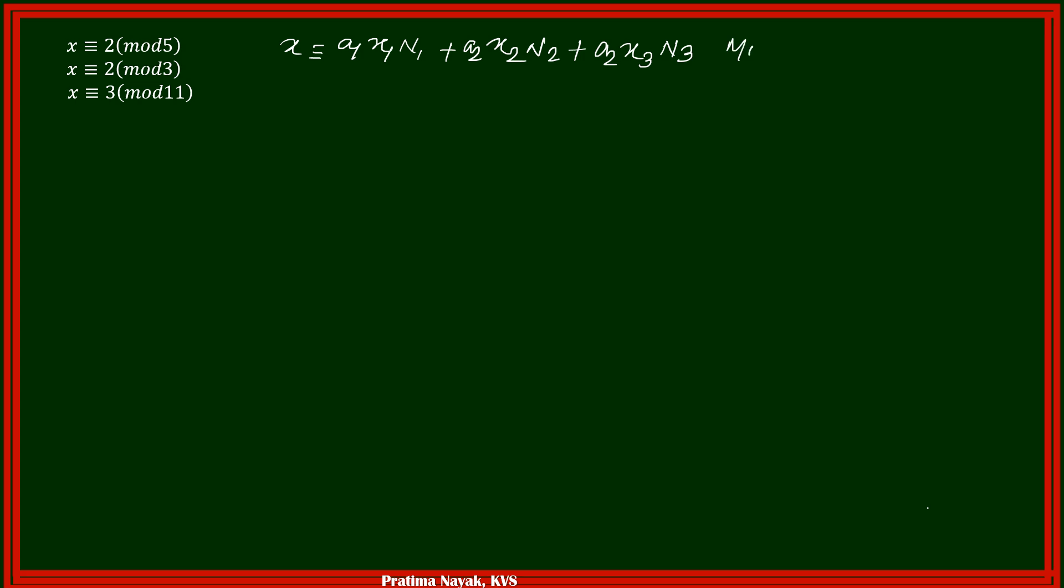So modulo n. And n equals to n1, n2, n3. Just while solving the problem, if you will note it carefully, you can get it. So first is, I am writing A1, A1 equals to 2, this one is A1, A2 is equal to again 2, this is A2, A3 is equal to 3, this is your A3. And this will be small n1, small n2, small n3. So n1 equals to 5, n2 equals to 3, and n3 equals to 11.